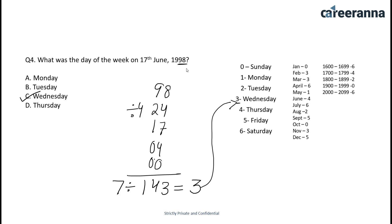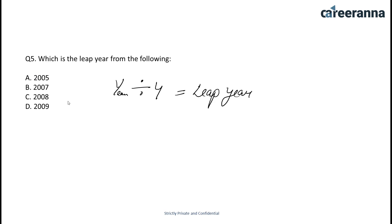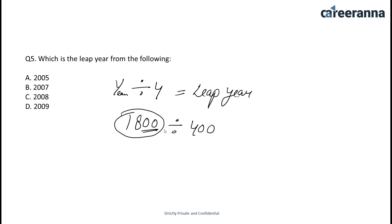Let's see the last question — question 5: which is the leap year from the following? For the leap year we have to check whether the year is divisible by 4 or not. If it is divisible by 4 then it is a leap year; if not, it is an ordinary year. If you get a century year like 1800 whose last two digits are not divisible by 4, then we divide the century by 400 — if it is divisible by 400, it is a leap year.